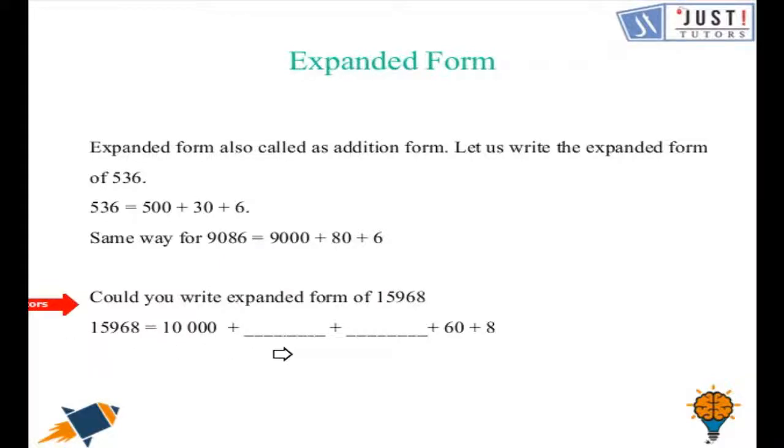So could you try to expand this number 15968. We can do it together. So the first is 10,000 add 5000 add 900 and as you can see it's written add 60 add 8. I am sure you must have understood the meaning of expanded form and how to write it in expanded form.